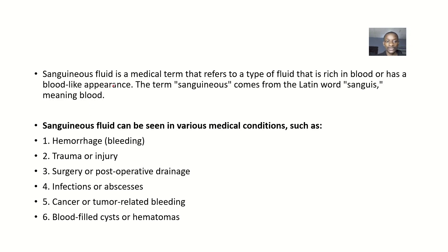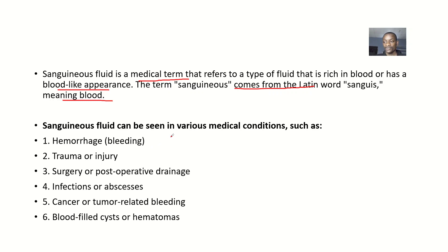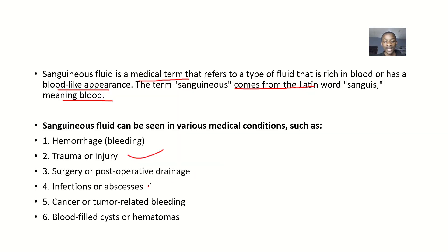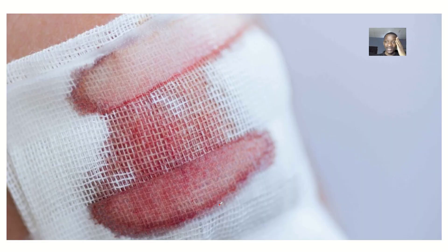Sanguinous fluid is a medical term that refers to a type of fluid that is rich in blood, or has a blood-like appearance. The term sanguinous comes from the Latin word sanguis, which means blood. Sanguinous fluid can be seen in various medical conditions such as hemorrhage — when a person is bleeding — trauma and injury, surgery or post-operative drainage, infections and abscesses, cancer and tumor-related bleeding, and blood-filled cysts or hematomas. All these are medical conditions where you might see sanguinous fluid.